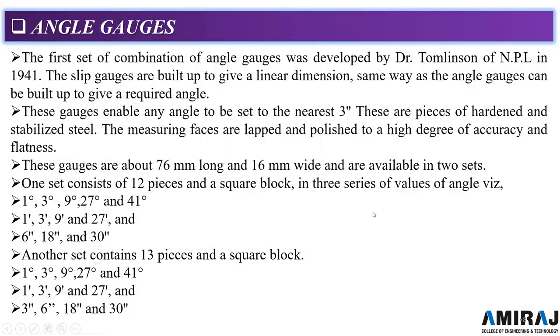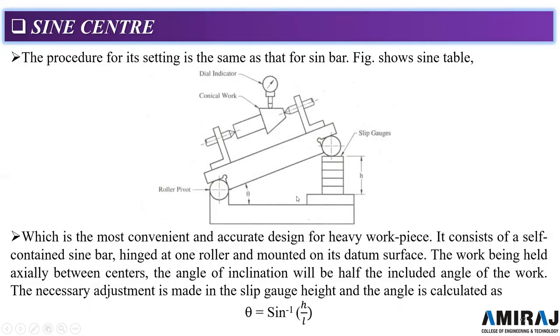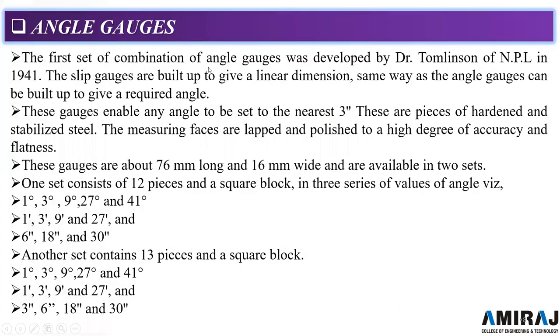Now next there are angle gauges. After the sine center, we will see the angle gauges. Angle gauges are directly used. As we know that the slip gauges are used for length measurement, similarly the angle gauges are the same and they can be directly used for angle measurement. The first set of combination of angle gauge was developed by Dr. Tomlinson of NPL National Physical Laboratory in 1941. The slip gauges are built up to give linear dimension, same way as the angle gauges can be built up to give required angles.